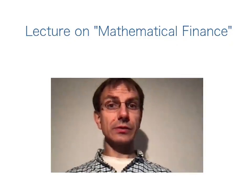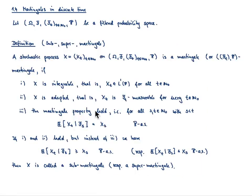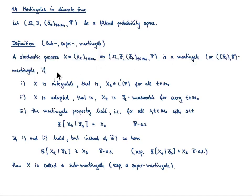Let us start with the definition of a martingale. To fix once and for all a filtered probability space, which I would like to denote as usual with omega, f, f_t, and P. The stochastic process, which I denote by x, on our filtered probability space is a martingale — or if you would like to emphasize its dependence on the filtration and the law, an f_t, P-martingale — if the following holds true.